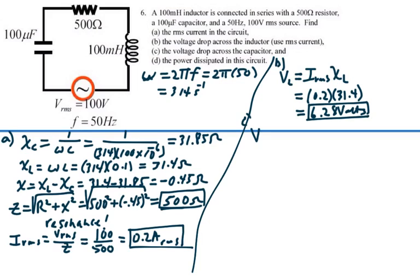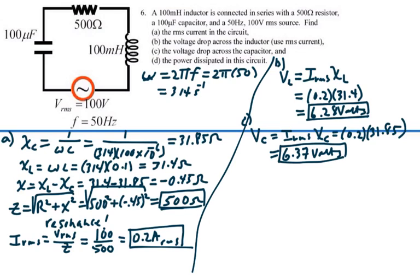C, voltage across the capacitor is the RMS current times the capacitive reactance, which will be 0.2 times 31.85, which will be 6.37 volts. So that is the voltage across the capacitor.